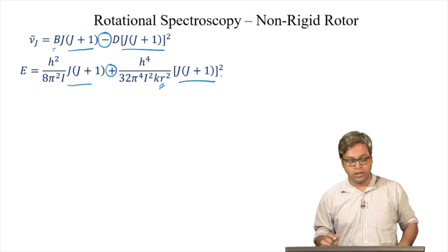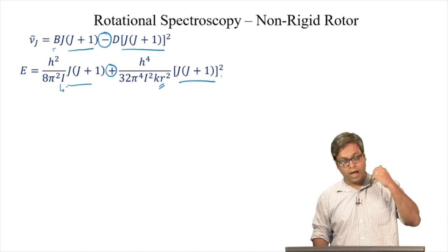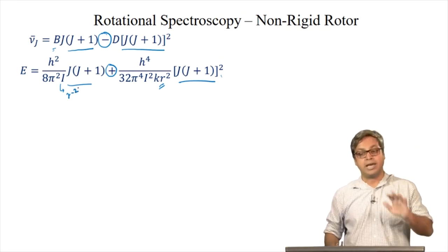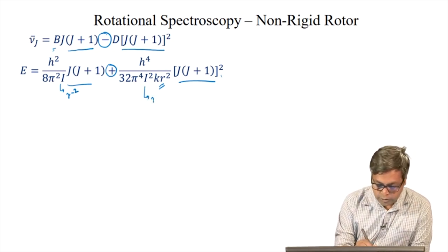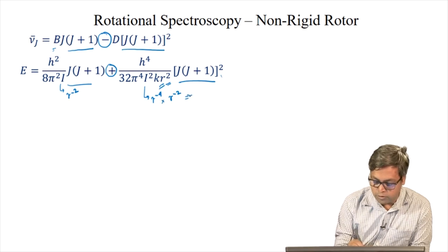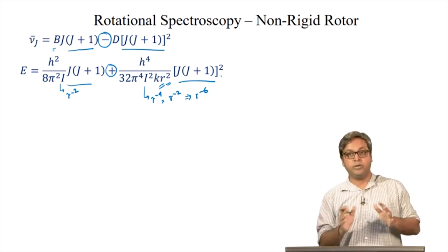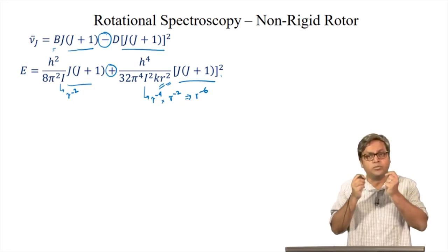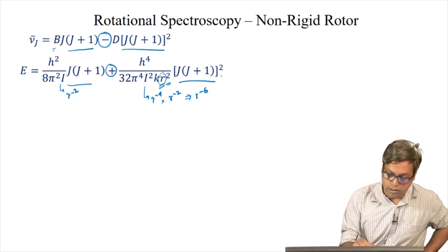Looking carefully at the equation, the first term is proportional to R⁻², since I = μR². The second term has I² (giving R⁻⁴) and another R² factor, making it proportional to R⁻⁶. Since the centrifugal distortion changes the bond length by only a small amount, for the second term we simply replace R with R₀.